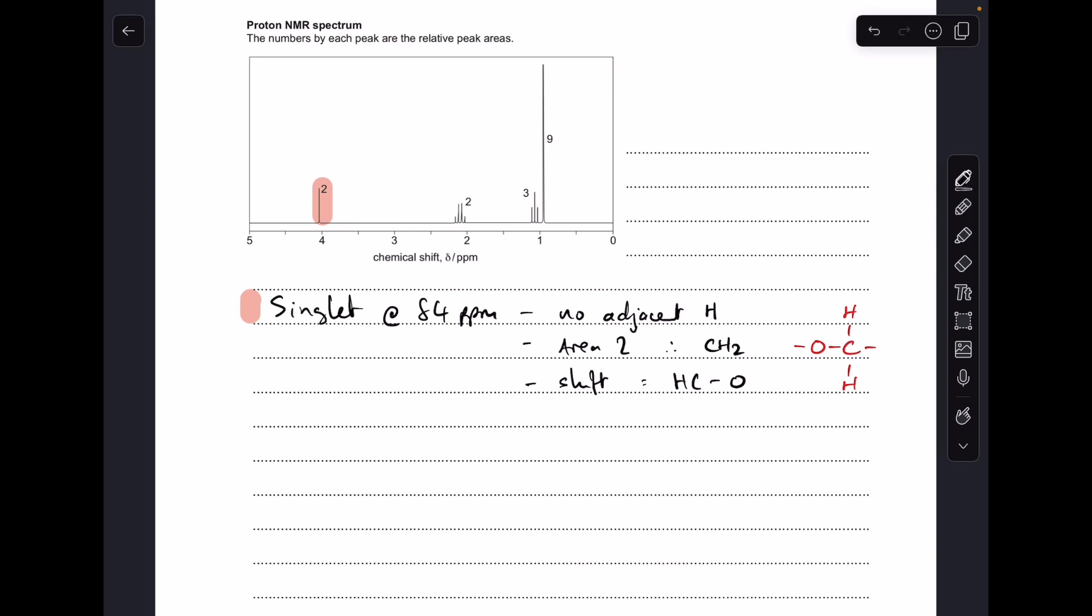Area 2 means that there are two hydrogens in the environment causing the signal, so that's a CH2 group. The shift of 4 ppm is indicative of an H-C-O single bond environment. Remember we think it could be an ester, and that's definitely one of the bonds in an ester group, so that red structure that I've drawn up there is what that all looks like.